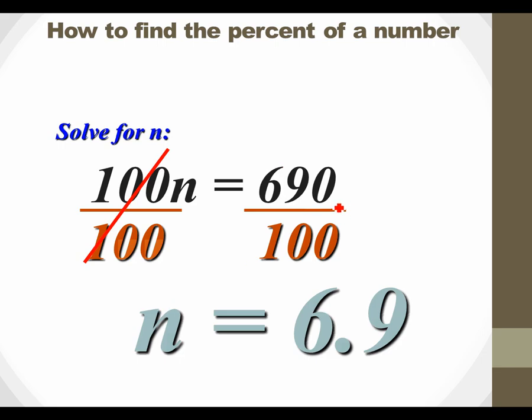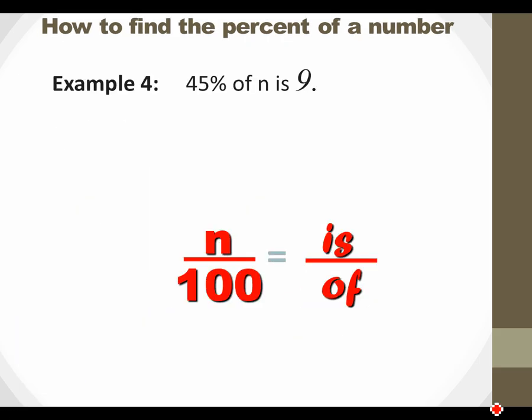In case you're wondering, if you ever divide by 100, it's just a matter of moving the decimal over. So if you want a little shortcut, you don't have to use your calculator. The decimal goes right there. Dividing by 100 is a really simple thing to do.